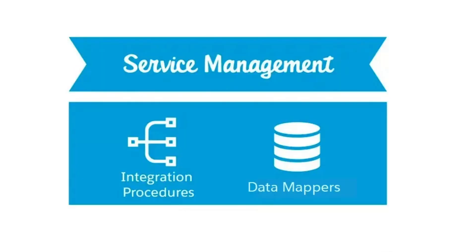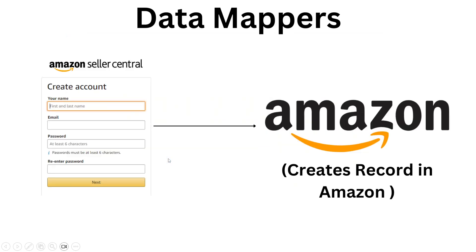Let's move on to the Service Management layer, which is specifically used to do interaction with the database. Whatever changes you make in the UI get updated in the database using this layer. There are two important things here: Data Mappers and Integration Procedures. Data Mappers handle UI-to-database interaction — for example, when you fill a create account page and click submit, a record gets created inside Amazon. Data Mappers can also do data extract, data turbo extract, and similar operations.